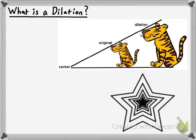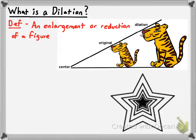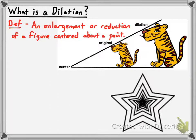A dilation is an enlargement or reduction of a figure centered about a point. Let me explain that. You're familiar with how a camera works — it's got a focus, a lens, and then the thing you're taking a picture of. That focus can be what you would call the center of a dilation. Everything focuses on that one point.